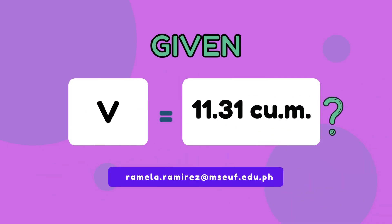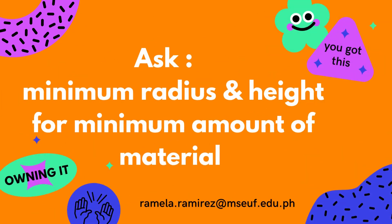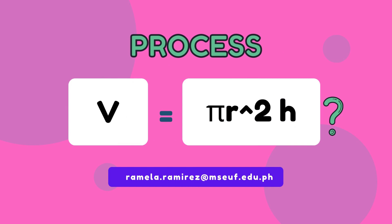According to the problem, the volume of the closed cylindrical water tank is 11.31 cubic meters. The unknown values being asked are the minimum radius and height for the minimum amount of material. Since the properties of the cylindrical water tank — minimum radius and height — are required, the formula for the volume of a cylinder may be applied: Volume equals pi times r squared times height.